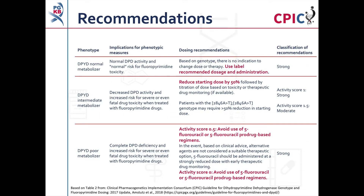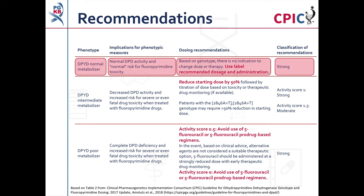These are the CPIC dosing recommendations for fluorouracil and capecitabine. Patients who are DPYD normal metabolizers have a normal risk for fluoropyrimidine toxicity and can be given the normal dose of fluoropyrimidines. The classification of this recommendation is strong.